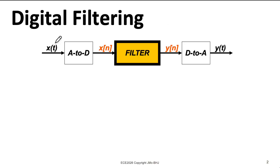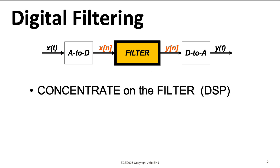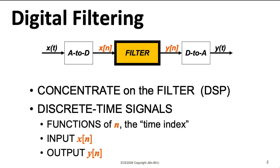The big picture is that you have a real world continuous time signal, X of T. We run that through an analog to digital conversion process to create the discrete time signal X of N. We process X of N to create an output signal Y of N that we then run through a digital to analog converter to create a continuous time signal in the real world.